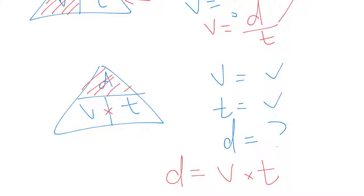Same thing, over the top of this one, if we're trying to find T, we cover over T, and we're left with a D over V. So T equals D over V.